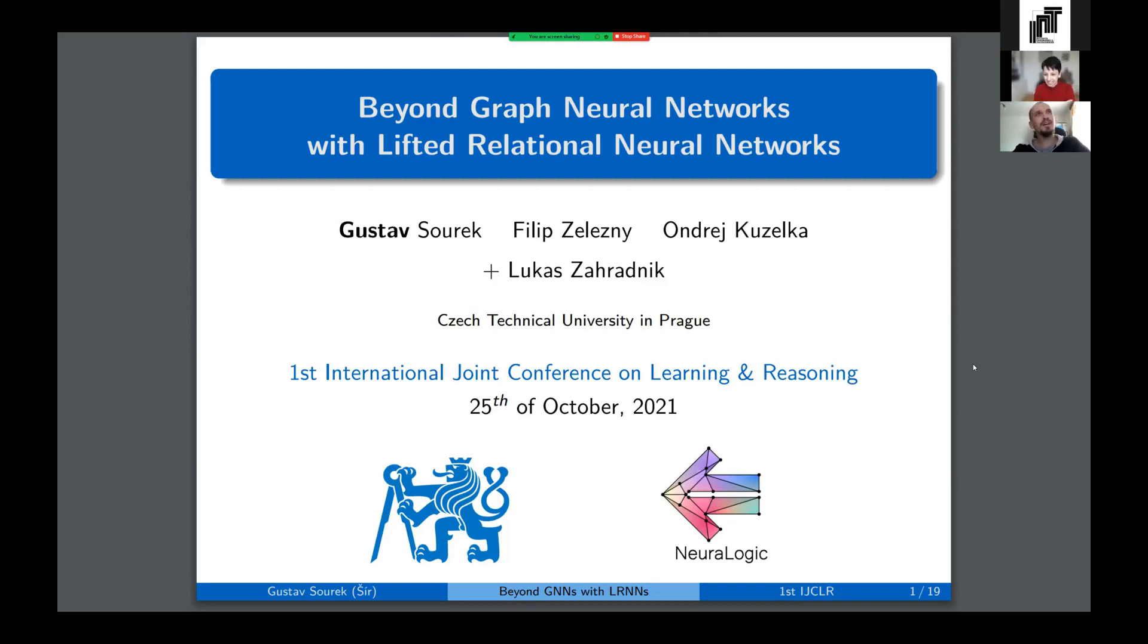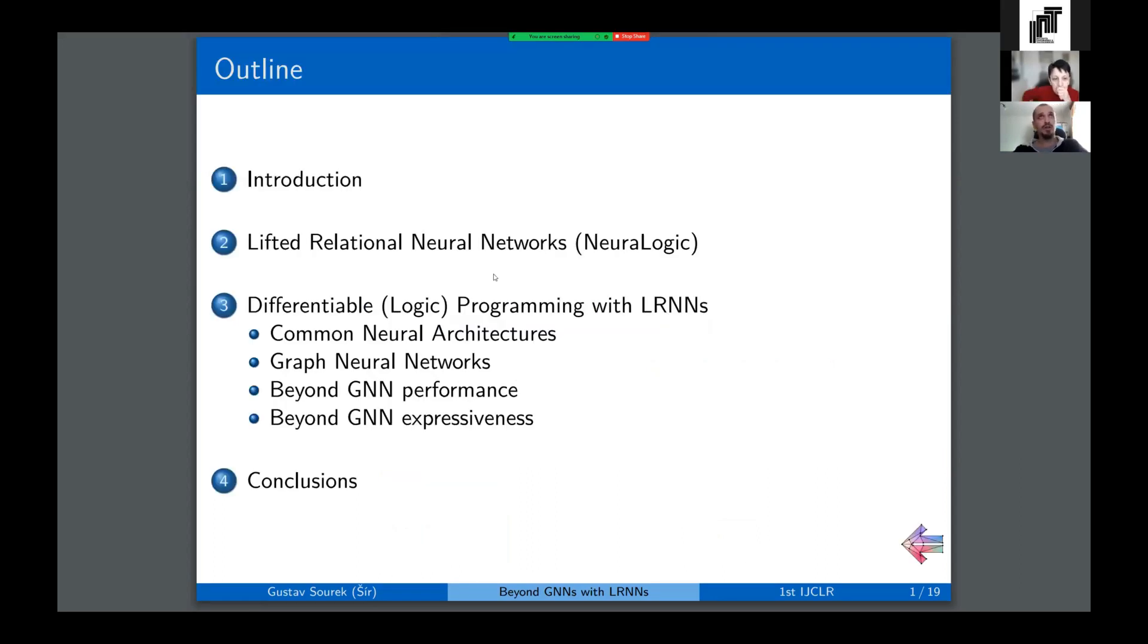It's great to virtually meet you all. My name is Gustav, and I will show how you can get beyond graph neural networks with this lifted relational neural networks framework that we introduced in 2015. We also call it NeuraLogic for short. The idea is to show you that it is more powerful than graph neural networks, and that you might want to consider using it, especially if you've been thinking about pushing the boundaries of graph neural nets in terms of expressiveness or combining them with logic. The structure of the talk is super simple. After some generic introduction, I will introduce the core framework itself, and then show you how we can use it to encode various neural architectures all the way up to graph neural nets, and then extrapolate beyond in terms of performance and expressiveness.